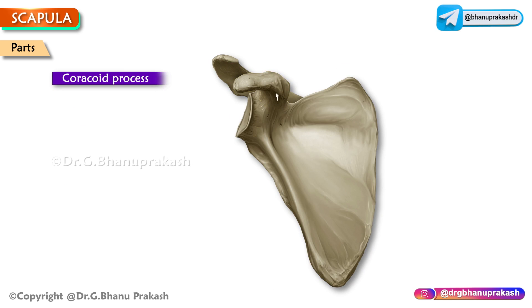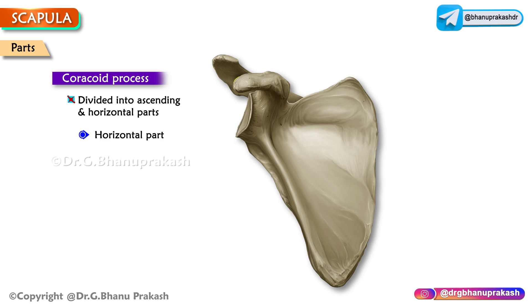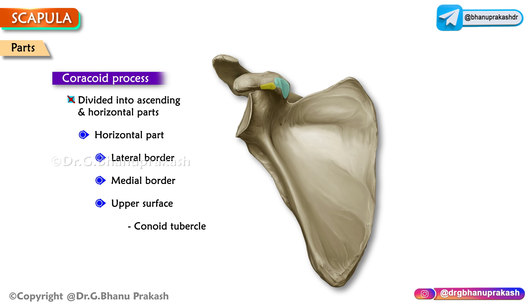The coracoid process projects from above the head of the glenoid cavity. It is divided into ascending and horizontal parts. The horizontal part presents with a lateral border, medial border, and an upper surface which has the conoid tubercle at the bend and the trapezoid ridge extending laterally from the conoid tubercle, and finally the lower surface.